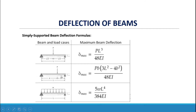Another load case: we have a concentrated load P at a distance A from the left support and at distance B from the right support. The maximum deflection is equal to PB(3L² − 4B²) all over 48EI.